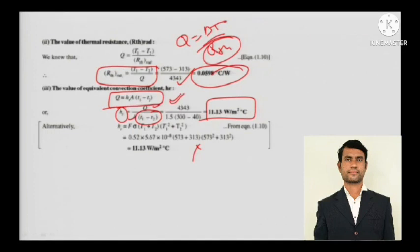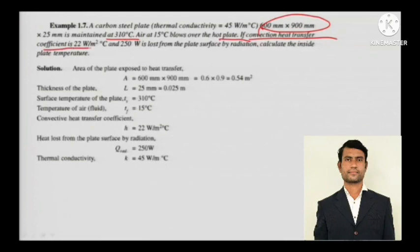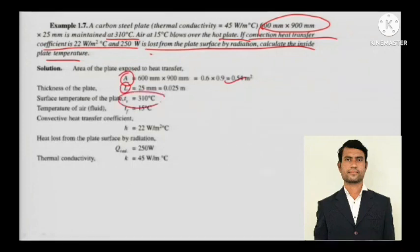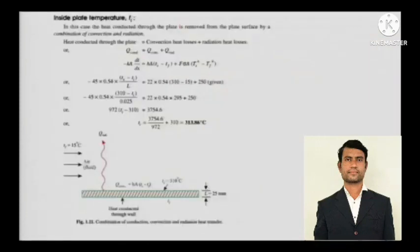Next problem: a carbon steel plate 600 mm × 900 mm × 25 mm is maintained at 310 degree Celsius. Air at 15 degree Celsius blows over the hot plate. The convection heat transfer coefficient is 22 W/m²K, and 250 W is lost from the plate surface by radiation. Calculate the inside plate temperature. Thermal conductivity k = 45 W/mK. All values are identified and given.